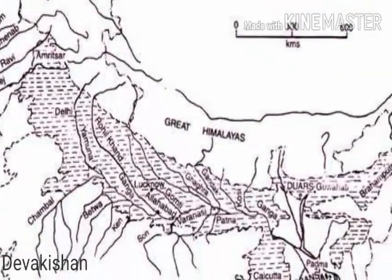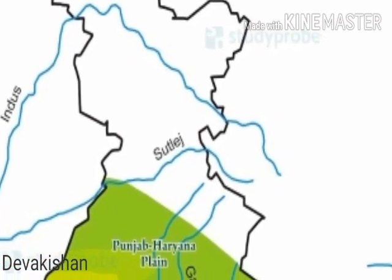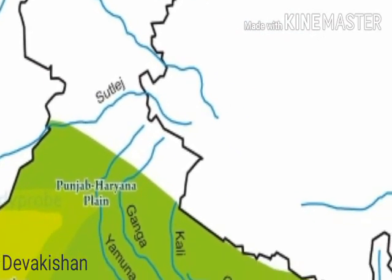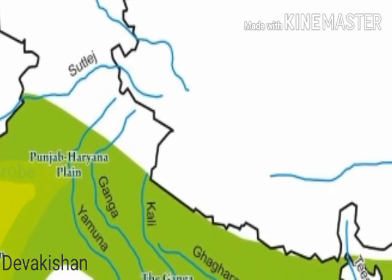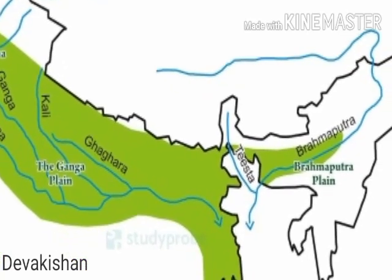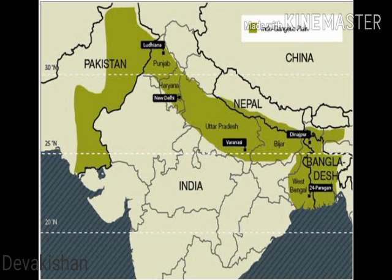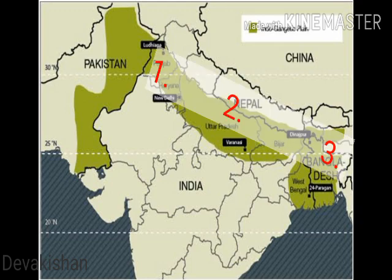The Indo-Gangetic Plains were formed by three Himalayan rivers — Indus, Ganga, and Brahmaputra — and their tributaries. About twenty million years ago, it was a shallow basin that was gradually filled with varied alluvial soil brought from the Himalayas by these rivers. These plains are divided into three divisions: the western part, the central part, and the eastern part.